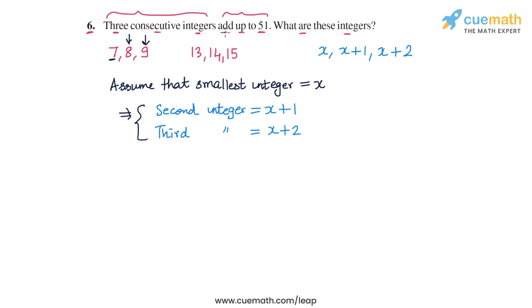Now, we need to make use of the fact that these three integers add up to 51. So the sum of these three integers, the sum of x and x plus one and x plus two, this sum should be equal to 51. And this gives us an equation in x that we can now solve.